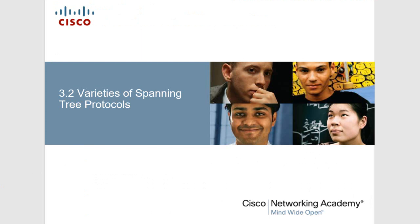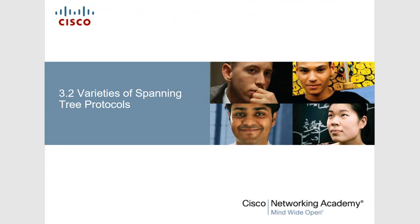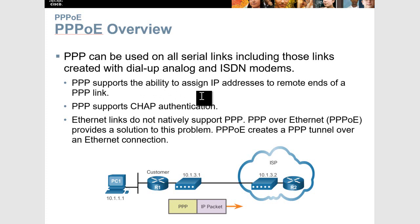Moving on to point-to-point over Ethernet. Point-to-point can be used on all serial links, including those created with dial-up, analog, and ISDN modems. PPP supports assigning IP addresses to remote ends of the point-to-point link, supports CHAP and PAP. However, Ethernet links do not natively support point-to-point — point-to-point over Ethernet is a solution to that, creating a tunnel over the Ethernet connection.